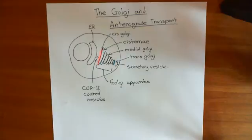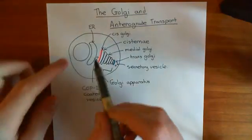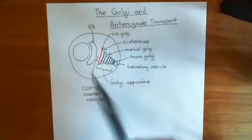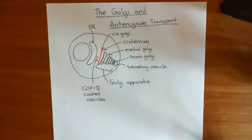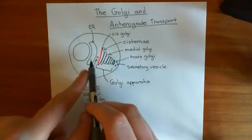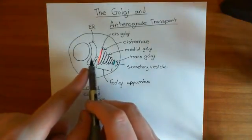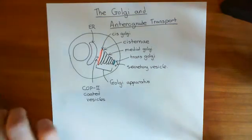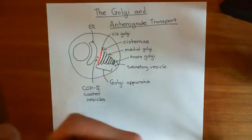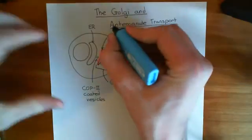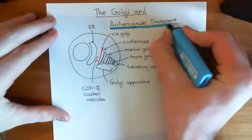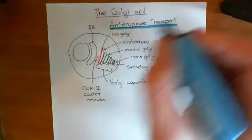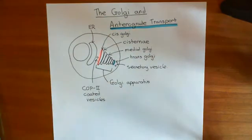Either the protein will be in the vacuole of the secretory vesicle, in which case it will be released into the extracellular space, or it will be in the membrane of the secretory vesicle, in which case it will be incorporated into the plasma membrane. Now what we want to do is look at these COP2-coated vesicles, because taking a protein from the endoplasmic reticulum to the cis-Golgi is the process of anterograde transport.